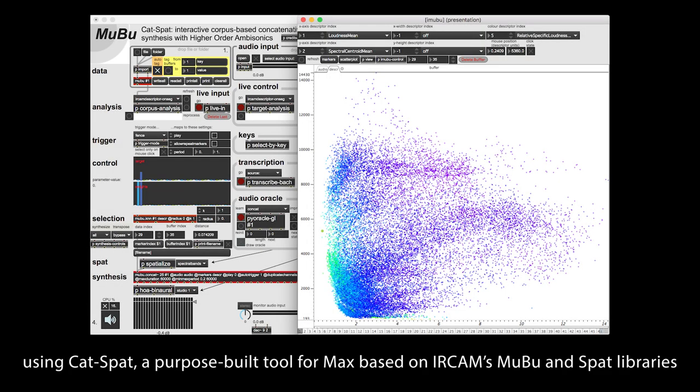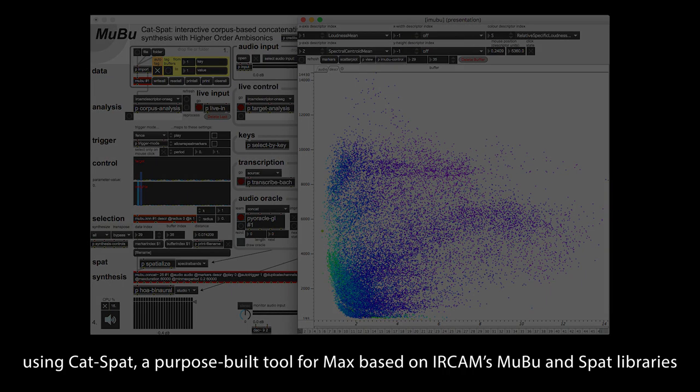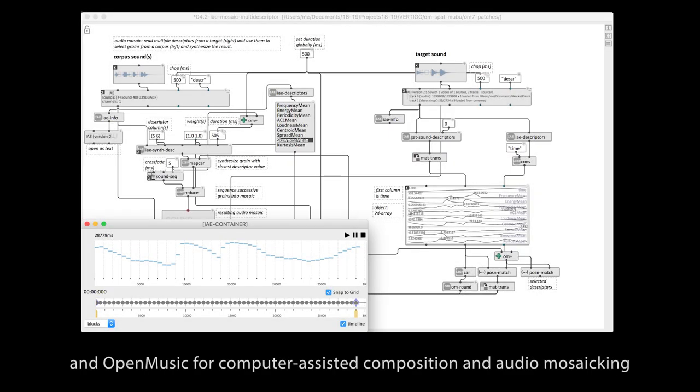Using CATSpat, a purpose-built tool for Max based on IRCAM's MUBU and SPAT libraries, and open music for computer-assisted composition and audio mosaicing.